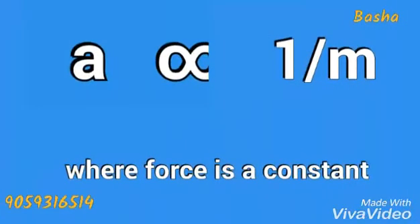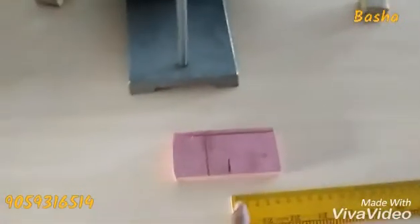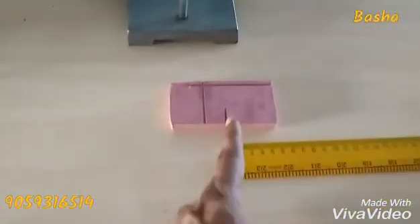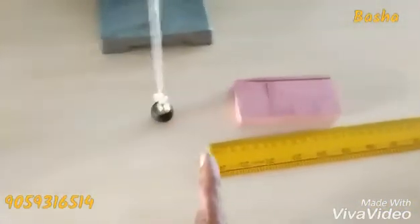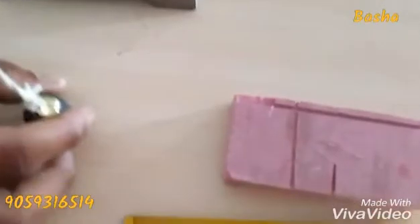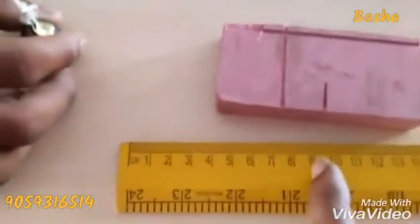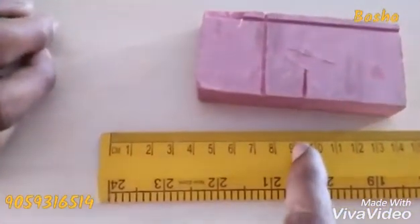The second part: acceleration is inversely proportional to the mass where force is a constant. The center is showing 0. Pull this up to the edge — the bob is selected. Release. What is the displacement here? 9 cm.